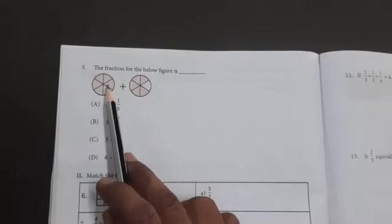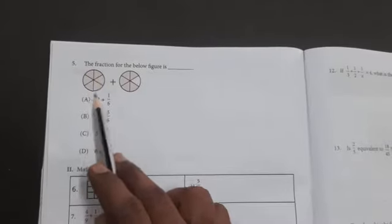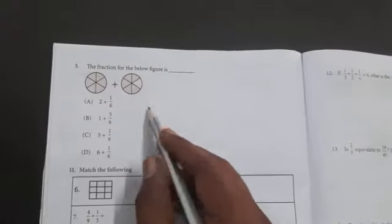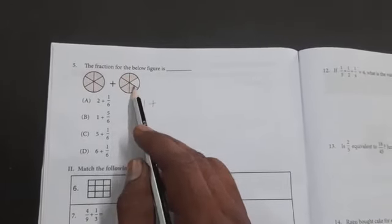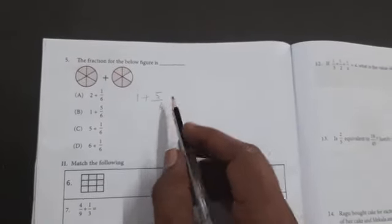Next question number five: The fraction for the below figure is. Consider the whole figure as one: one, two, three, four, five by five, six by six, equals one. Plus one, two, three, four, five shaded portions, so five. Five by total of six equals one plus five by six. Option B is the correct answer.